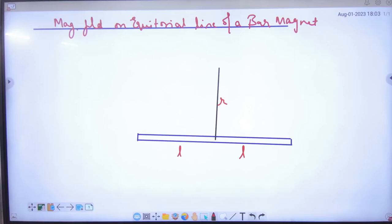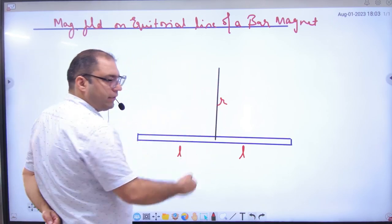So the question is, magnetic field B also has an equatorial line of a bar magnet. So equatorial line is a perpendicular bisector line.